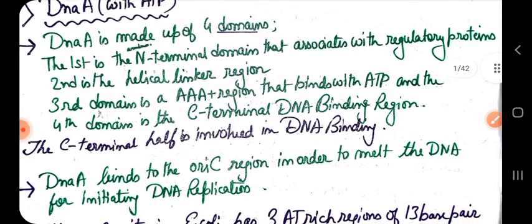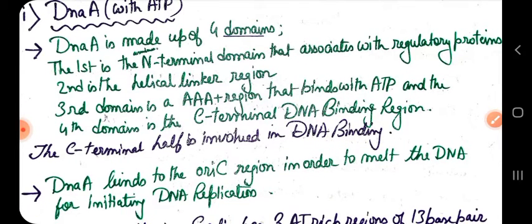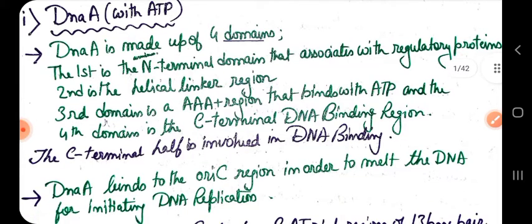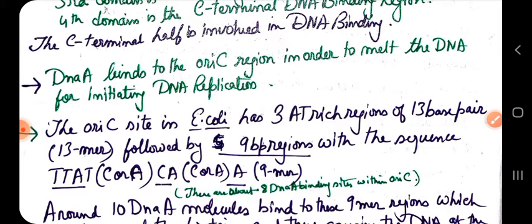DnaA has four domains with respective functions: domain 4 is the DNA-binding region, domain 3 binds ATP, domain 2 is the helical linker, and domain 1 is the amino terminal domain associated with regulatory proteins. The C-terminal half is involved in DNA binding. DnaA binds to the oriC region in order to melt and unwind the DNA for initiating the replication process.